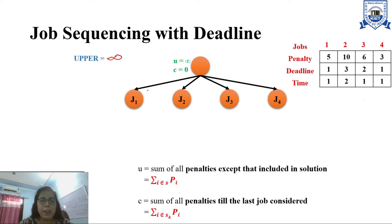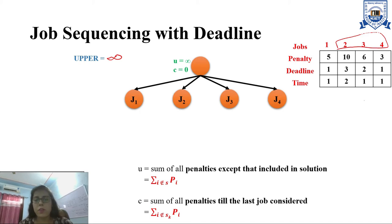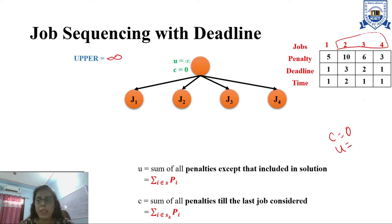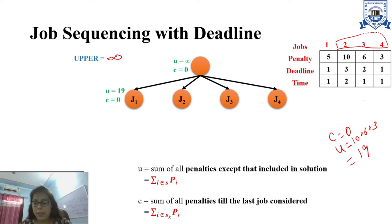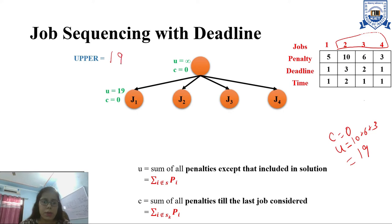If I include only job 1, none of the other jobs are excluded at this point. Up till now I have not excluded jobs 2, 3, or 4 — I have just considered job 1. So C will be 0 because I have not excluded any job. However, U will be equal to 10 plus 6 plus 3, which is 19. So U will be 19 and C will be 0. I can now update 'upper' to 19 because 19 is lower than infinity — I have received a U value lower than the existing value.